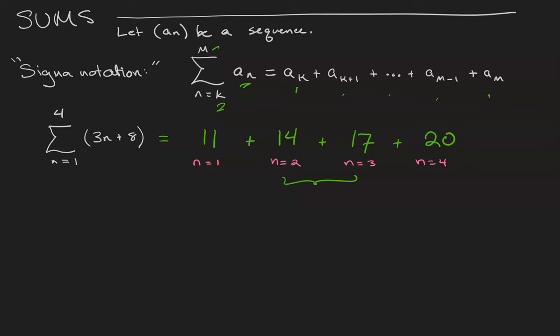14 plus 17 together make 31. 31 plus 11 is 42. Plus 20 makes 62. And that's the value of the sum.